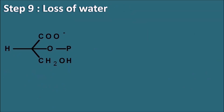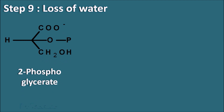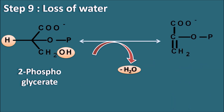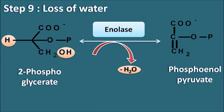Step 9 is the loss of water. From 2-phosphoglycerate, the hydrogen from the second carbon and the OH group from the third carbon are removed as a water molecule. When this water molecule is removed, a double bond forms between the second and third carbon, producing phosphoenolpyruvate. This reaction is mediated by the enzyme enolase.